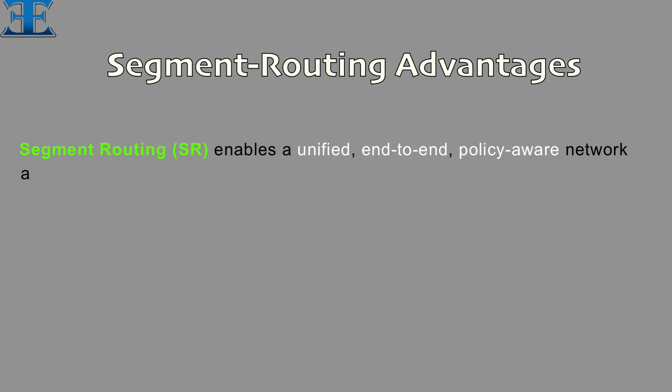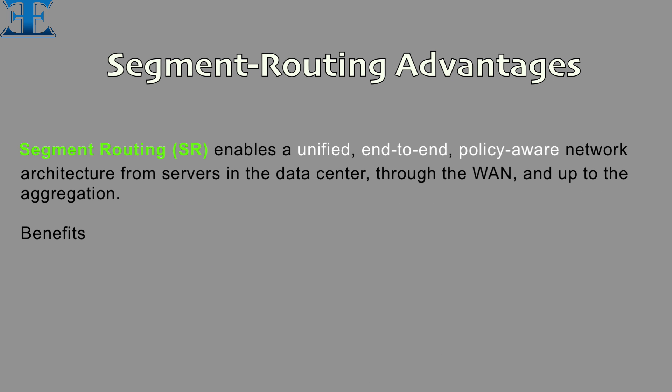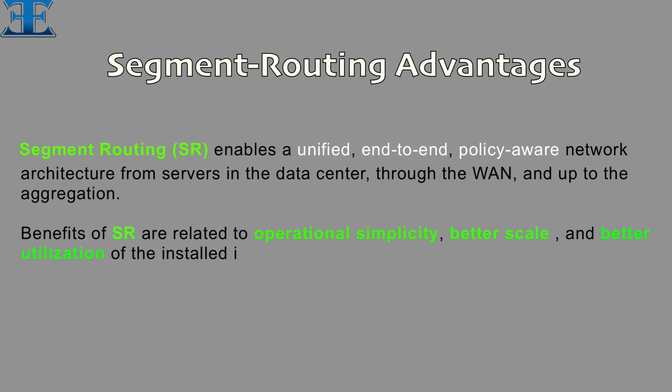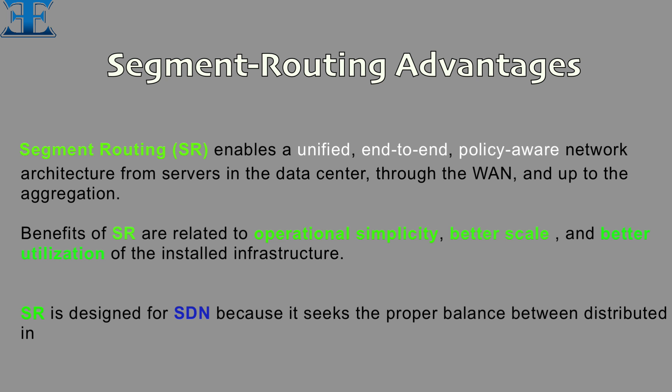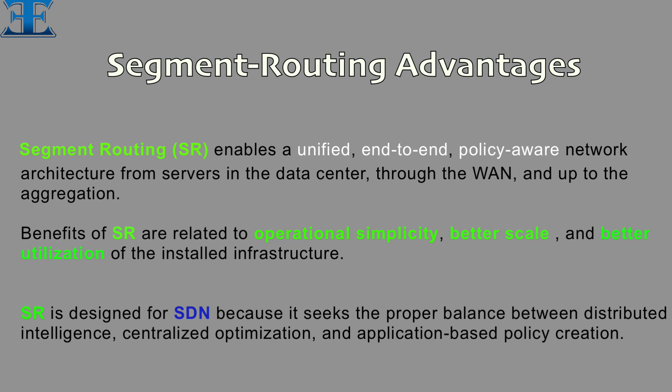Segment routing advantages. Segment routing enables a unified, end-to-end, policy-aware network architecture — from servers in the data center, through the wide area network, and up to the aggregation layer. Benefits of SR are related to operational simplicity, better scale, and better utilization of the installed infrastructure. SR is designed for SDN because it seeks the proper balance between distributed intelligence, centralized optimization, and application-based policy creation.